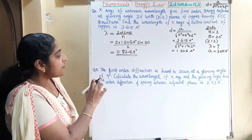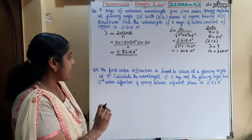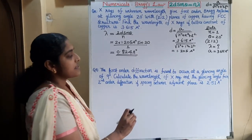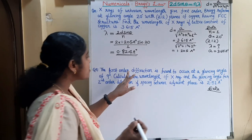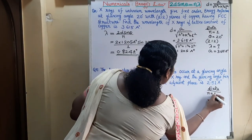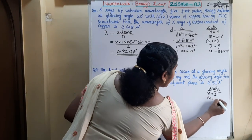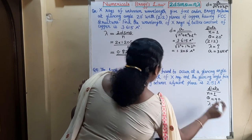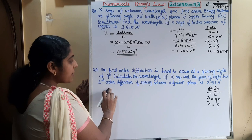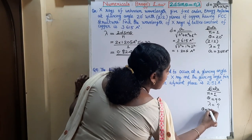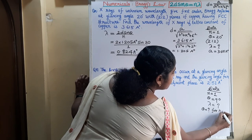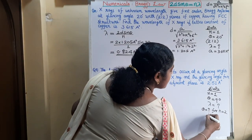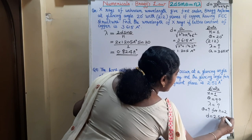Second question: The first order diffraction is found to occur at a glancing angle of 9 degrees. Calculate the wavelength of X-ray and the glancing angle for second order diffraction if the spacing between adjacent planes is 2.51 Angstroms. Given: first order diffraction so N equals 1, theta equals 9 degrees, D equals 2.51 Angstroms. We need to find lambda and theta for N equals 2.